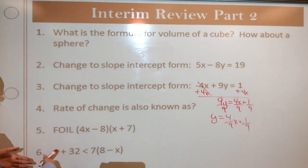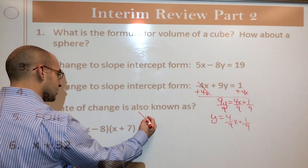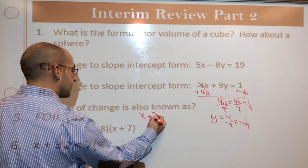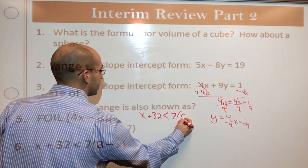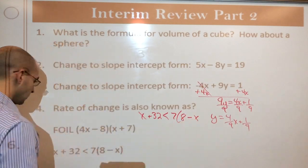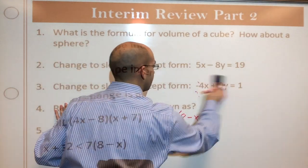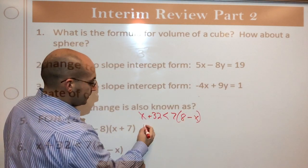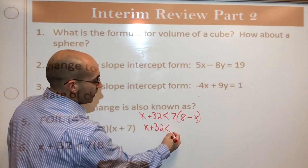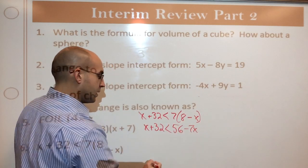Back to this one here. I'm going to solve it just like I would solve anything. I'm just going to rewrite it over here so I can see it a little better. x plus 32 is less than 7 times the quantity 8 minus x. Excuse me. Okay. Oh hey. Distribute 7.